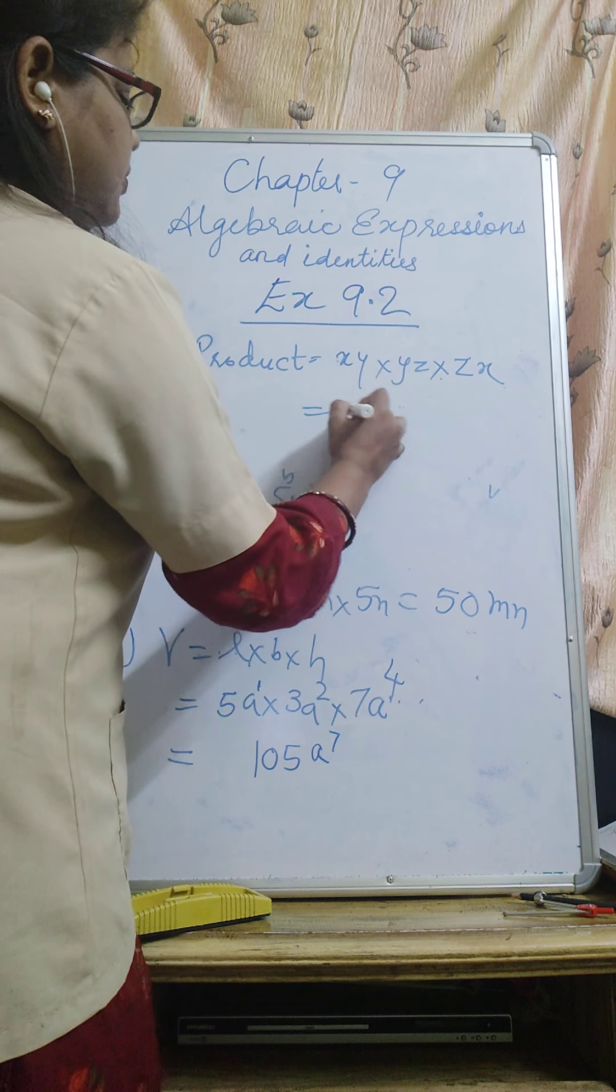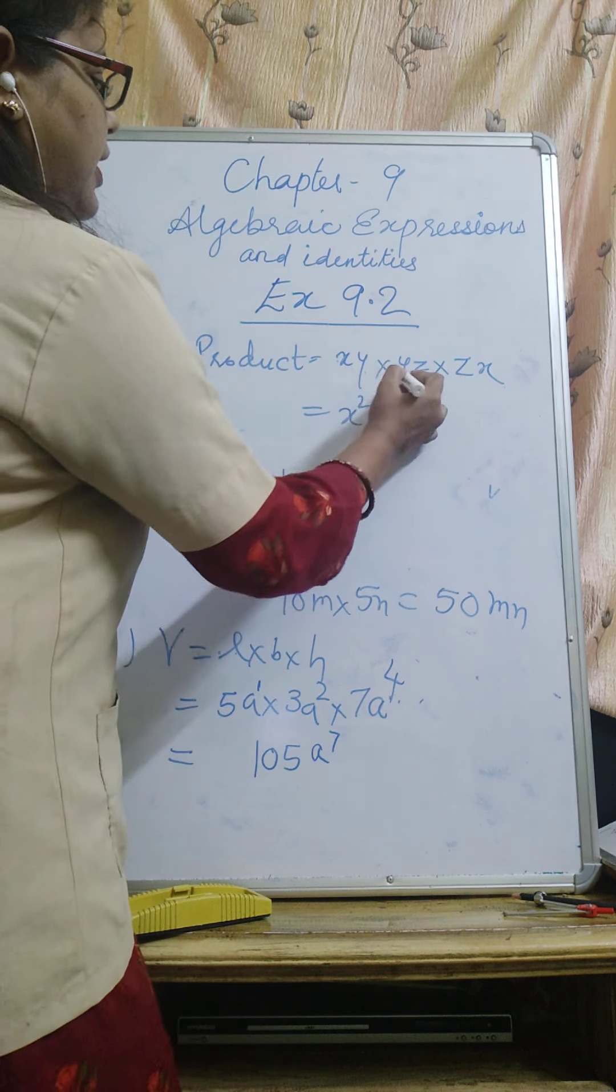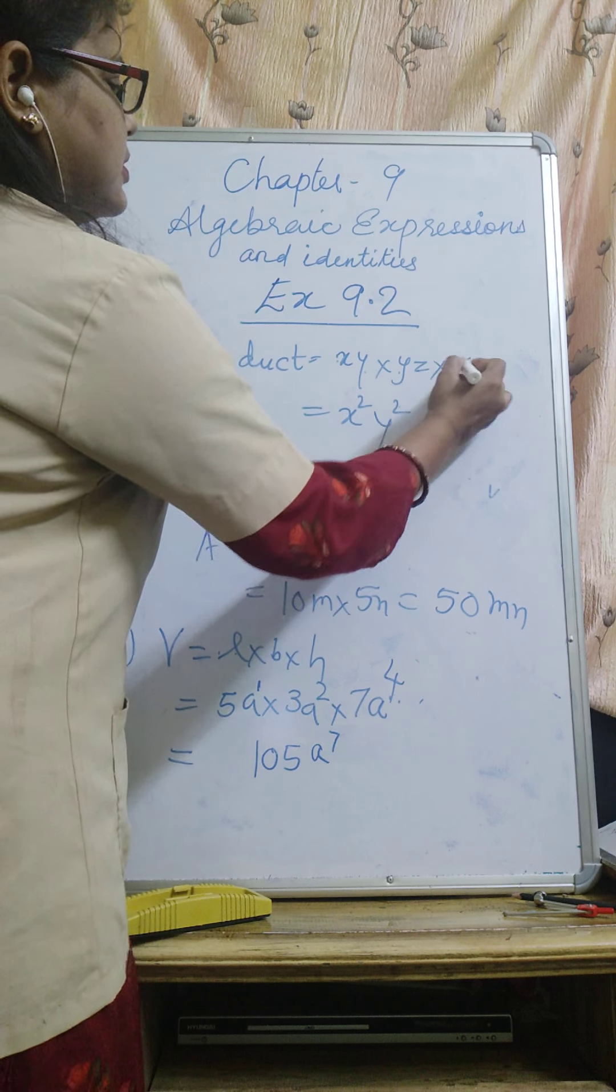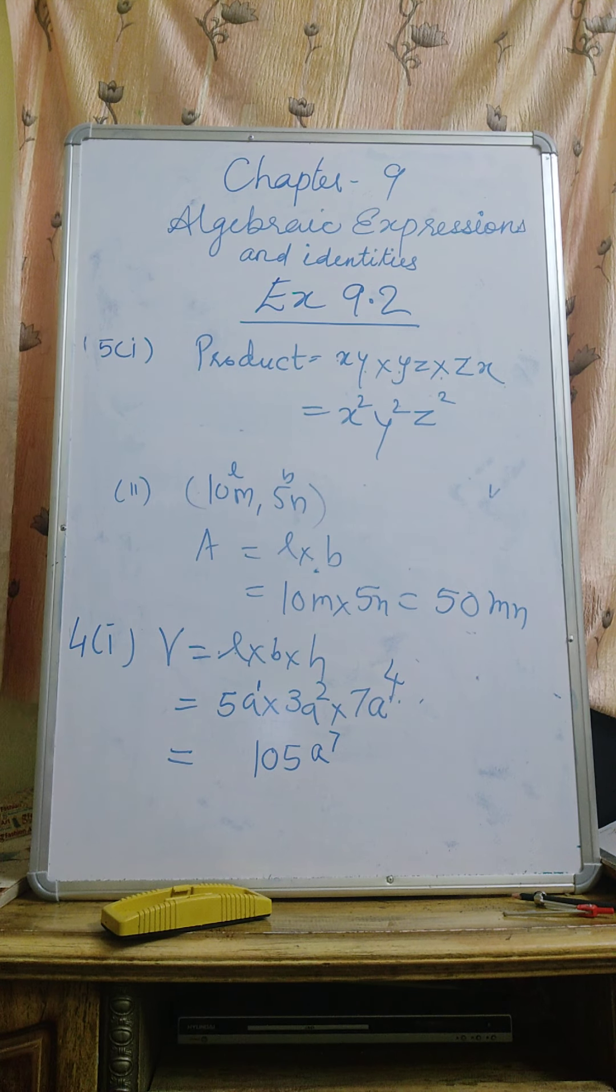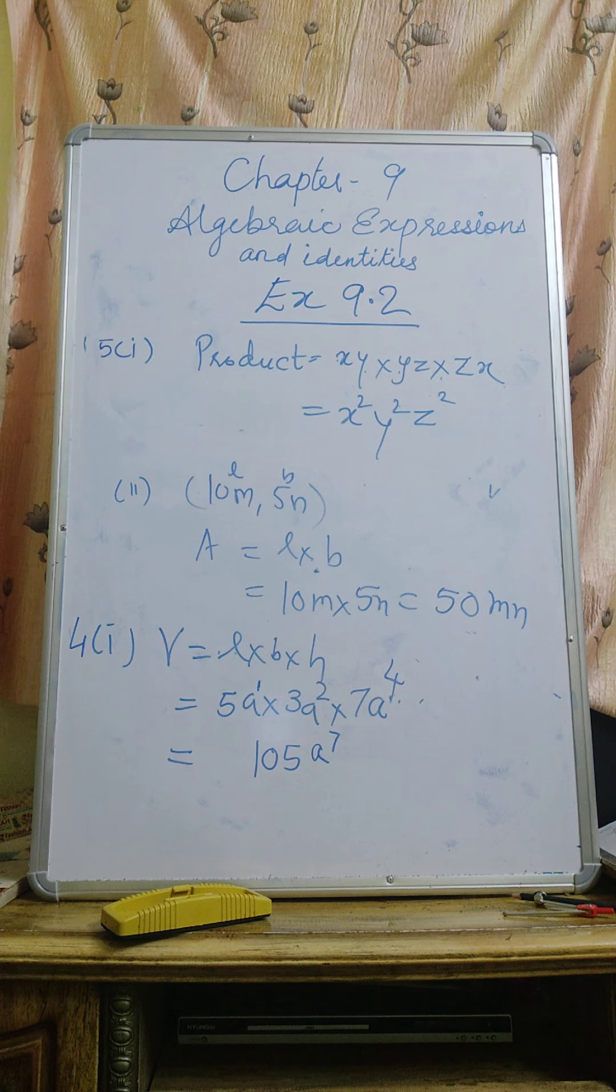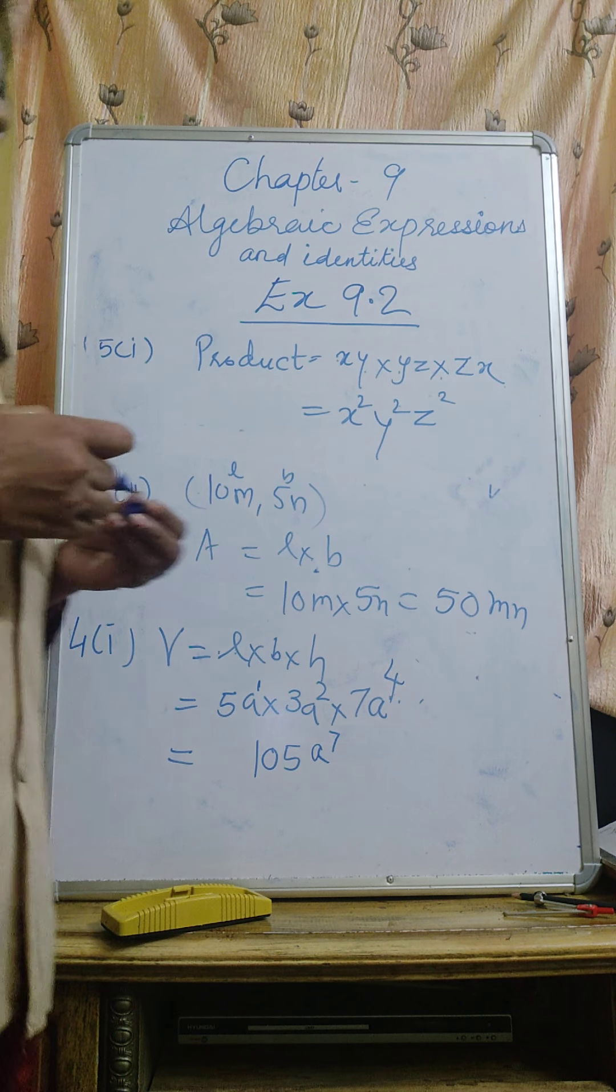XY into YZ into ZX. X times X is X square, Y times Y is Y square, Z times Z is Z square. We have to see the XX, YY, and ZZ. So it will come X square, Y square, and Z square.